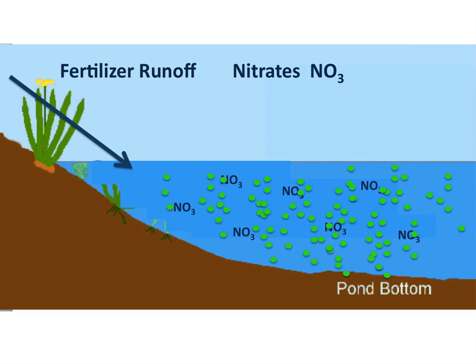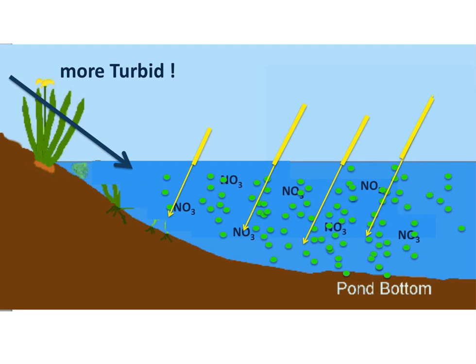Next thing you know, the green algae population is getting out of control — it's getting very, very green. The water is literally green, and again the term for that is turbid. The problem is now that when light tries to shine through, maybe on the surface and a few centimeters down, the light is fine. But once you get a little bit deeper, there's just not enough light for photosynthesis to occur.